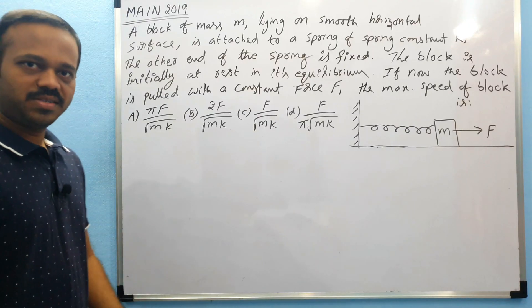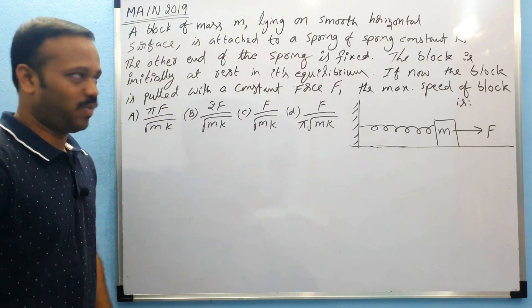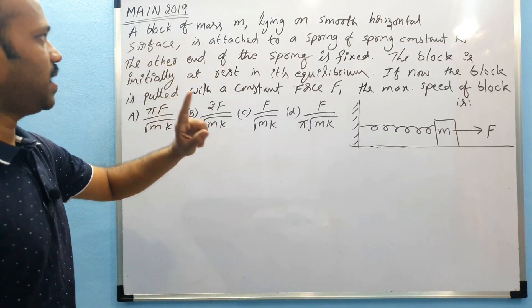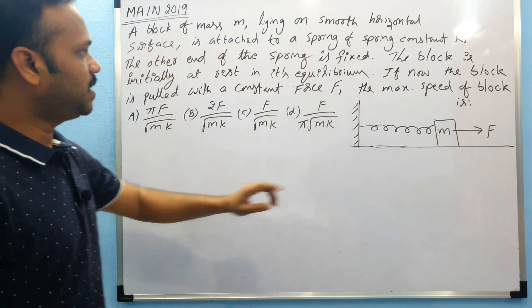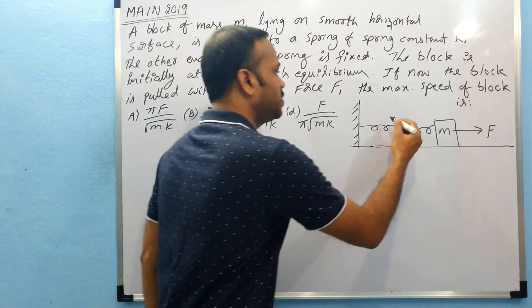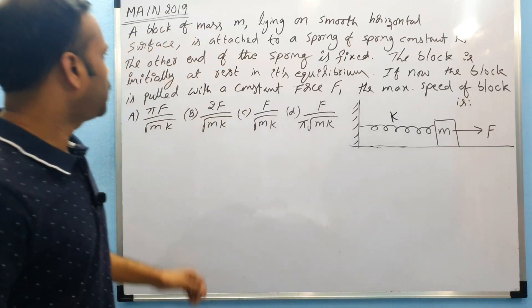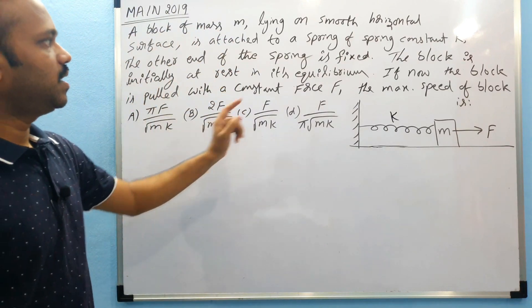This is the question given in May 2019. Let's see what is the question. A block of mass M lying on a smooth horizontal surface is attached to a spring of spring constant K, now initially at rest in its equilibrium position.